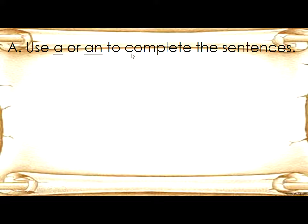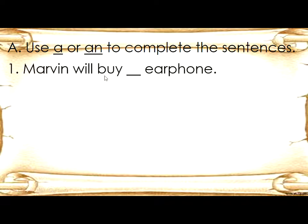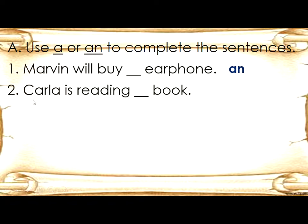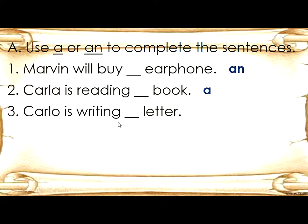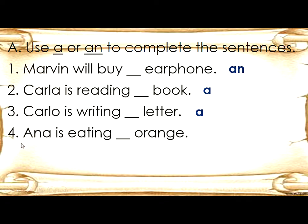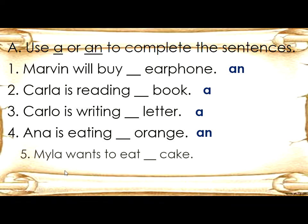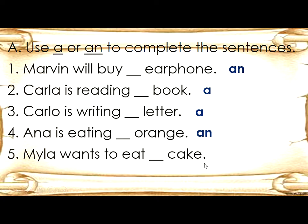Use A or AN to complete the sentences. Number one: Marvin will buy blank earphones — write AN. Number two: Carla is reading blank book. Number three: Carlo is writing blank letter — A. Number four: Ana is eating blank always — AN. Number five: Myla wants to eat blank food.